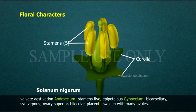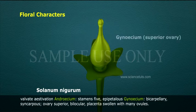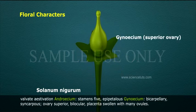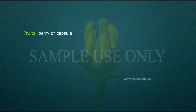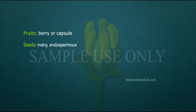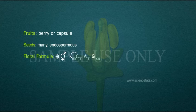Androecium: stamens 5, epipetalous. Gynoecium: bicarpellary, syncarpous. Ovary superior, bilocular. Placenta swollen with many ovules. Fruit: berry or capsule. Seeds: many, endospermic.